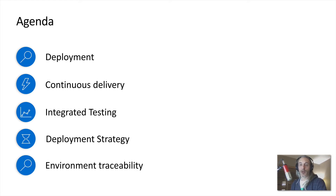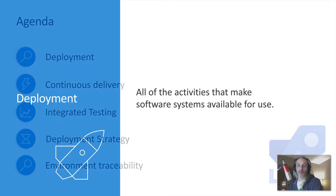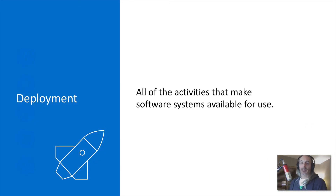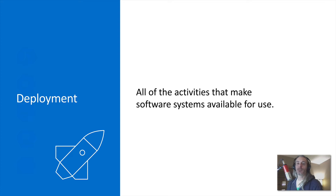Let's start with the definition of software deployment. Wikipedia defines software deployment as all of the activities that make software systems available for use. This can include everything from racking and stacking a server to deploying an updated piece of software onto that server.